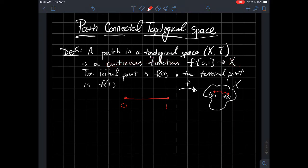Where the initial point, so when you plug in 0, f(0) will call that the initial point, and f(1) is what we'll call the terminal point.